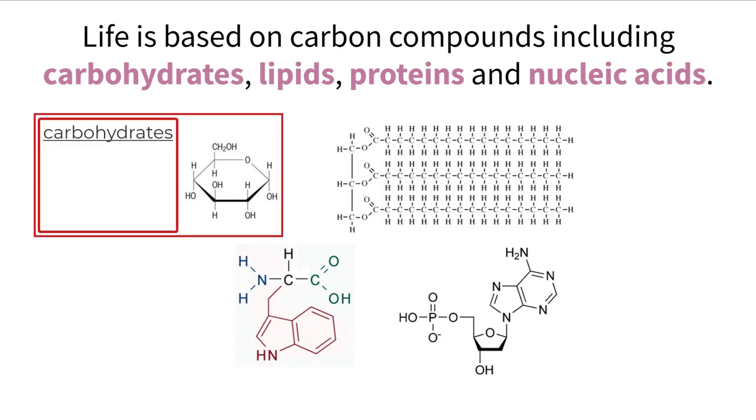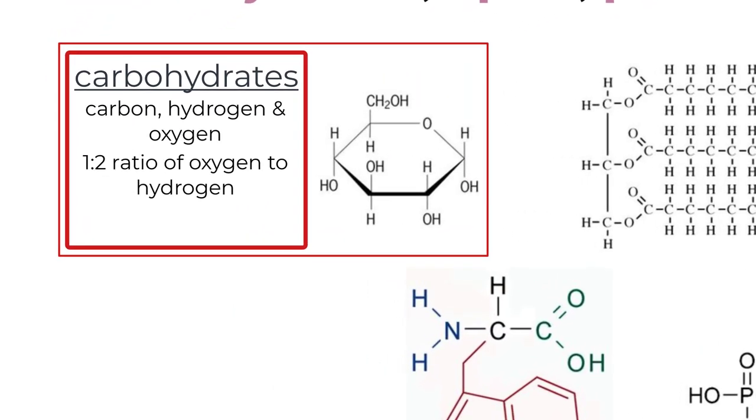Carbohydrates are molecules that contain only carbon, hydrogen, and oxygen. They have a specific ratio of oxygen to hydrogen atoms within them, which is always one to two. So for every oxygen atom we see, there should be two hydrogen atoms.